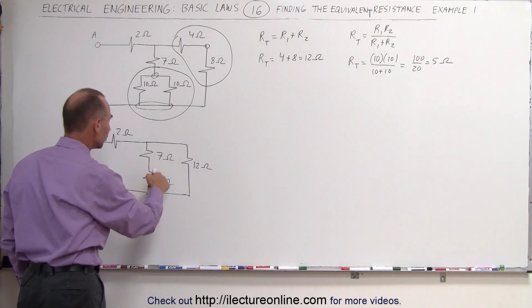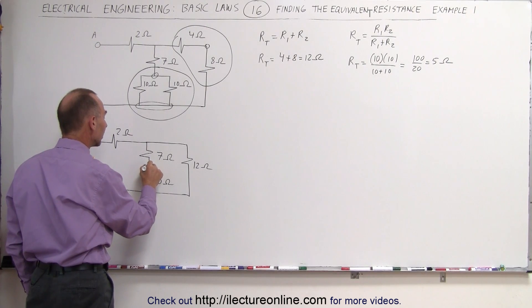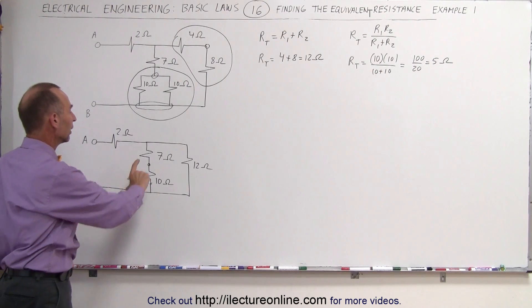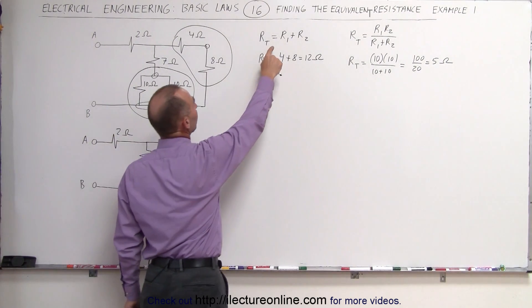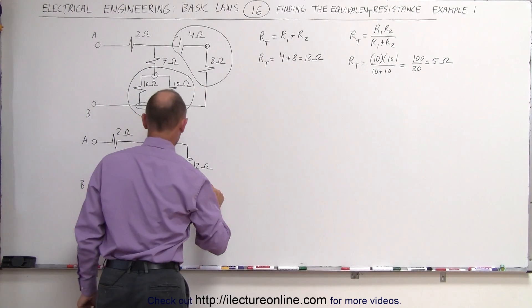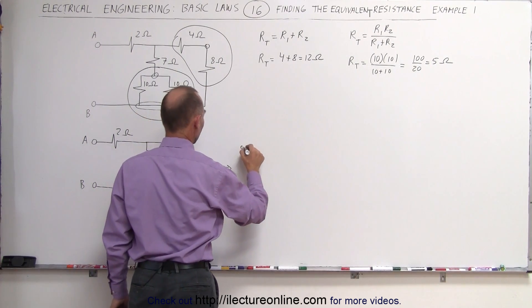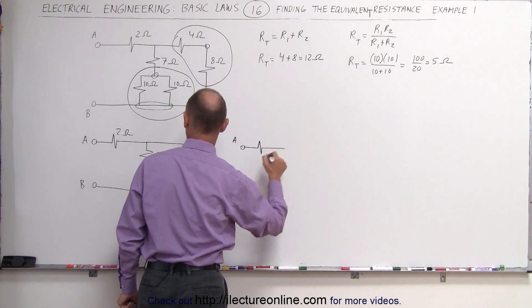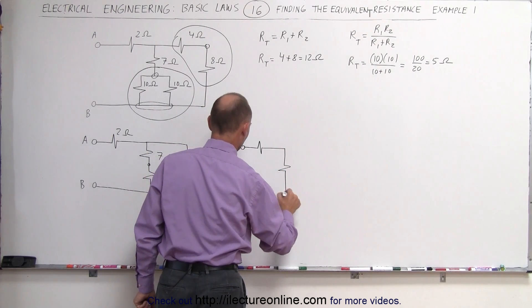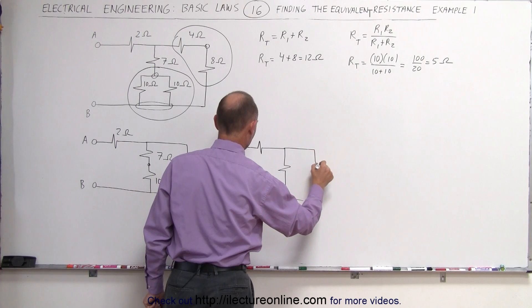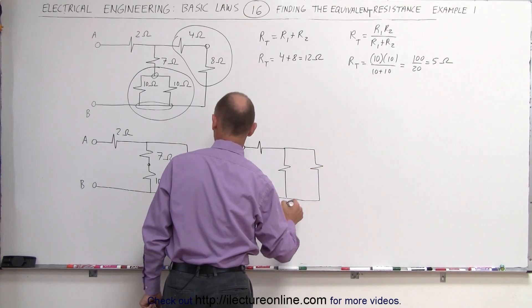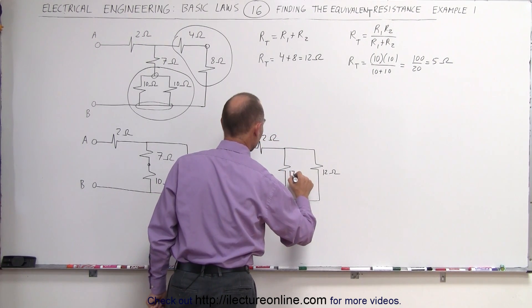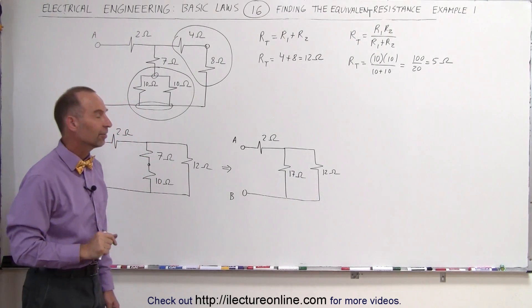Next, we look at the seven ohm and ten ohm resistors and realize they must be in series because they share a common node exclusively, not shared by any other resistor. The sum of two resistors in series is simply their sum, so the circuit now has a two ohm resistor, a twelve ohm resistor, and the seven and ten ohms collapse to a single seventeen ohm resistor.